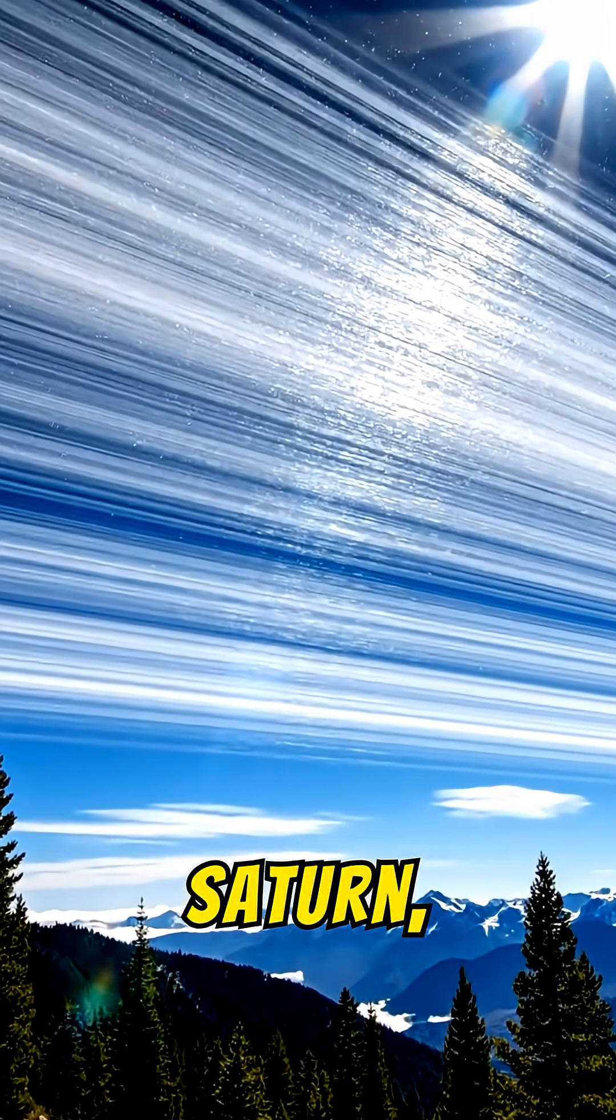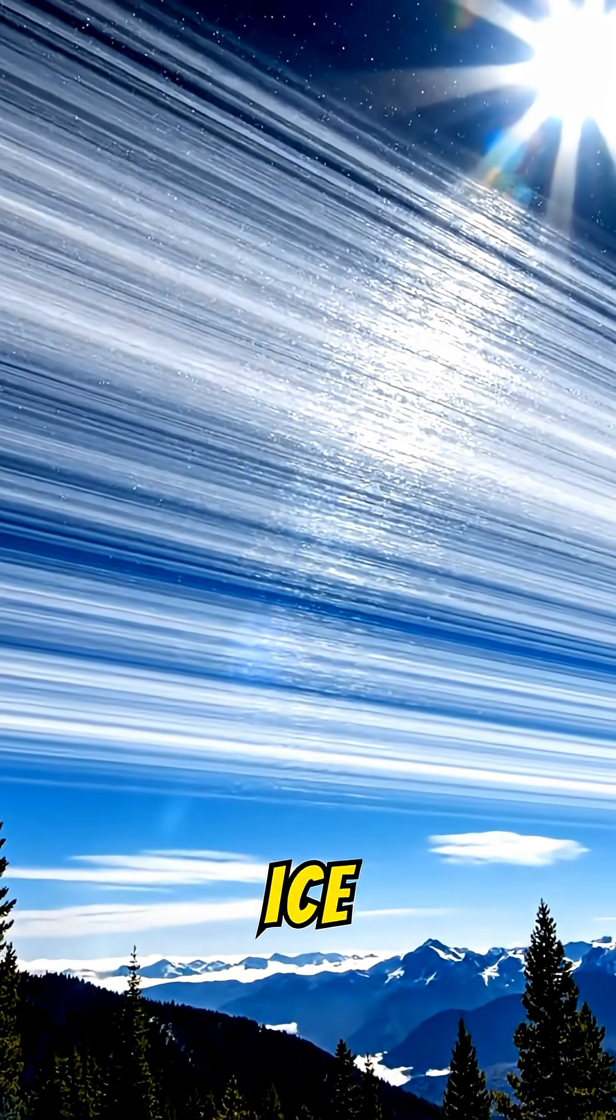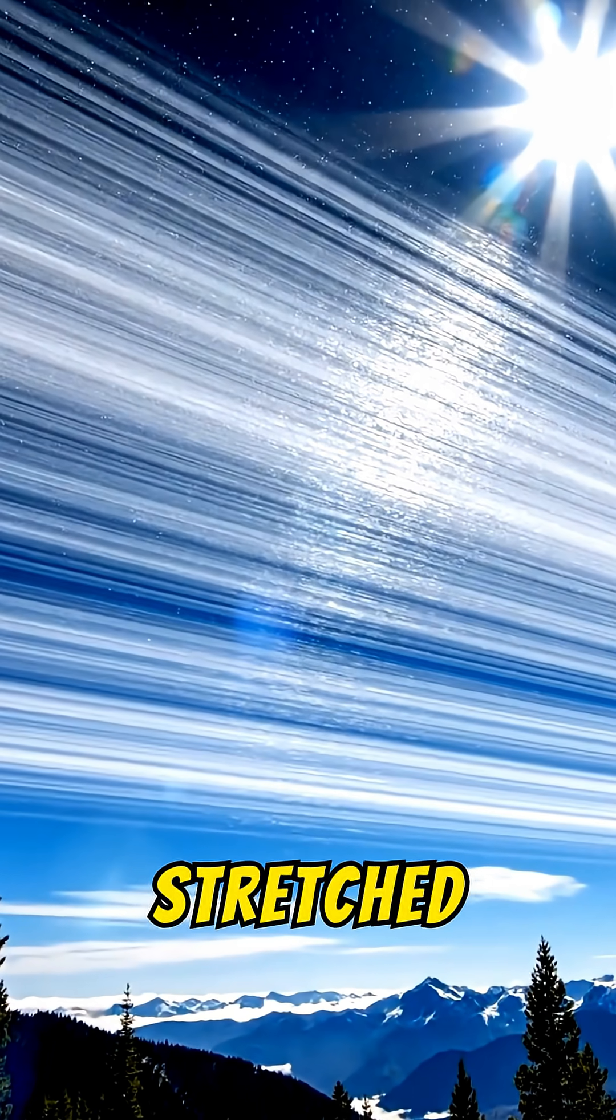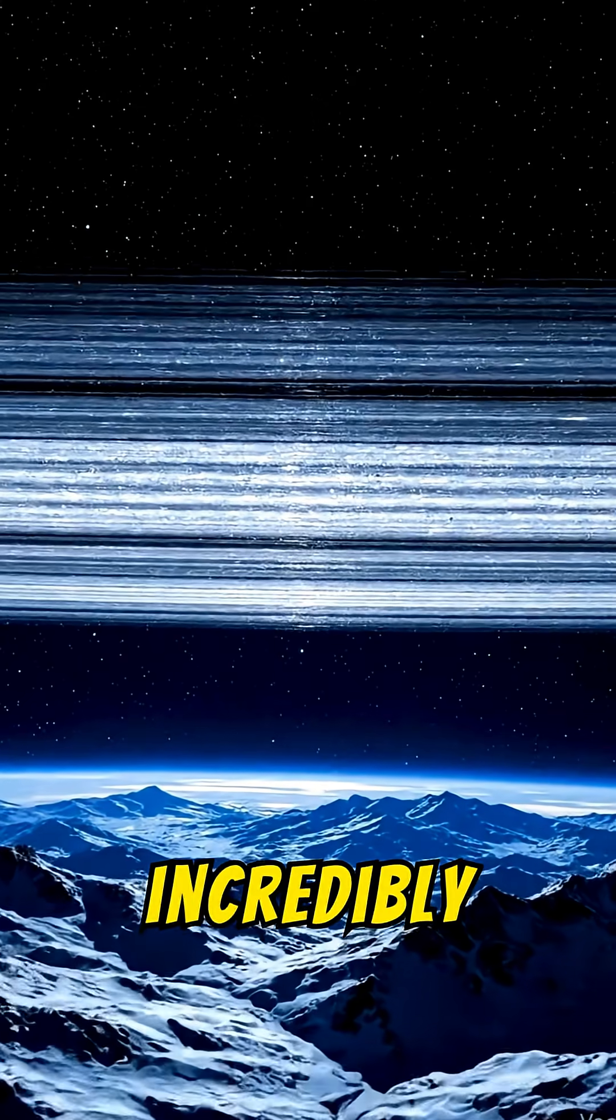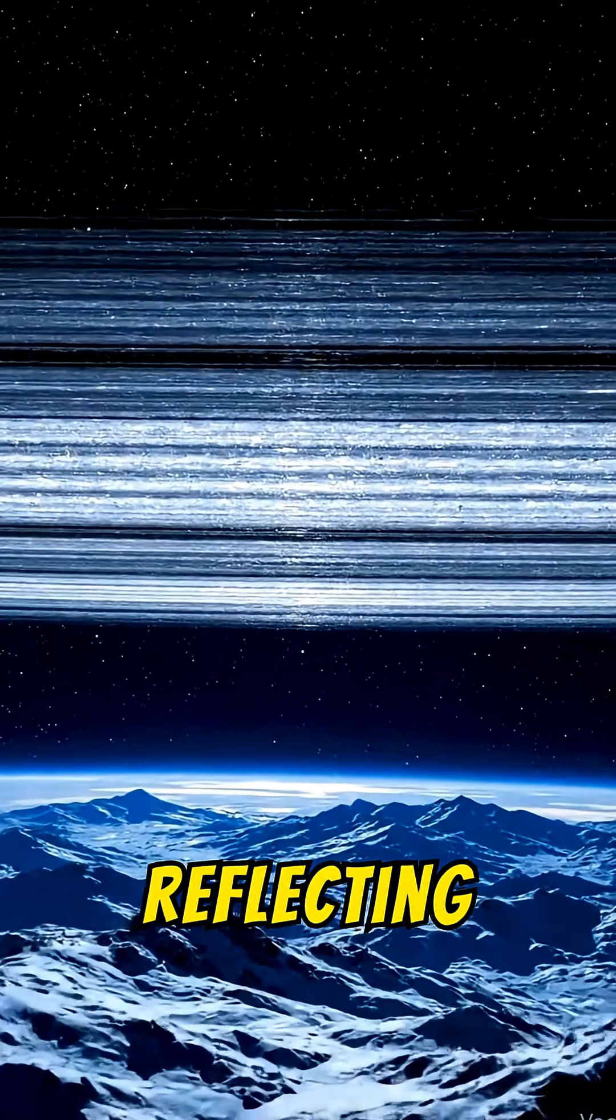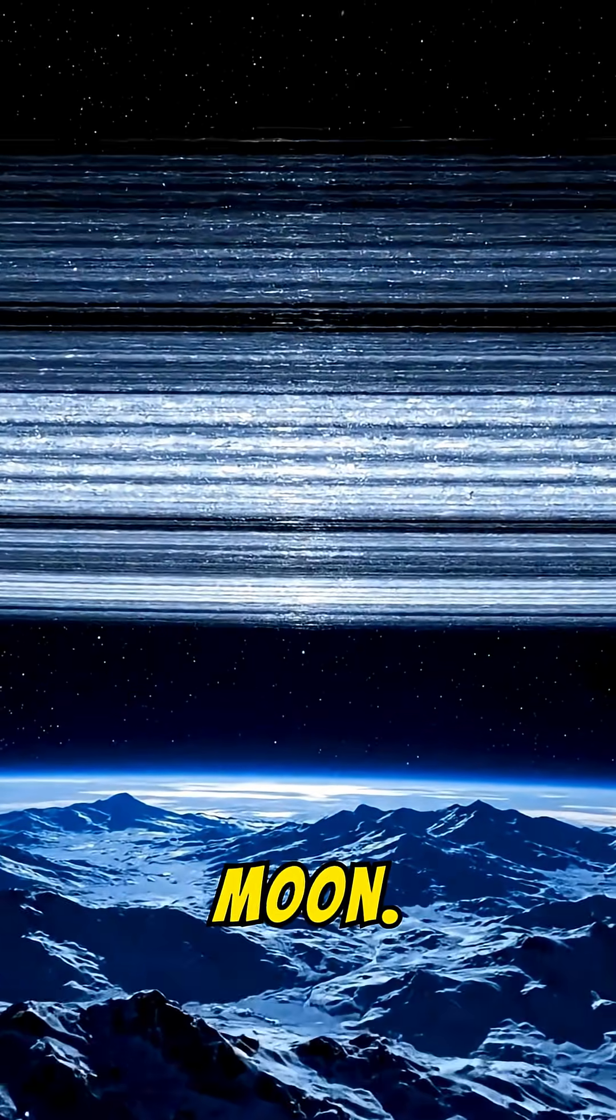If Earth had rings like Saturn, we would see a massive arc of ice and rocky particles permanently stretched across the sky. They would be visible during the day and incredibly bright at night, reflecting sunlight far more intensely than the moon.